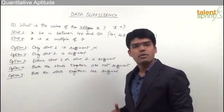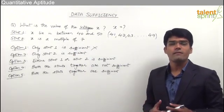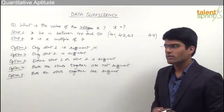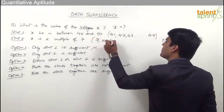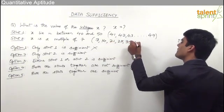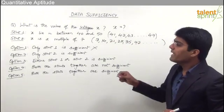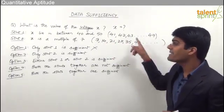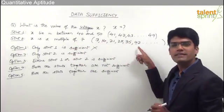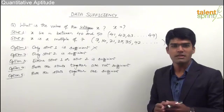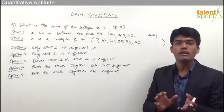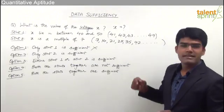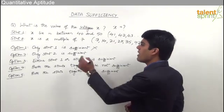Statement two says x is a multiple of 7. That means x can be 7, 14, 21, 28, 35, 42 and so on up to infinity. Even from statement two we can find possible values of x, but what exactly x is out of these infinite values is not known. Since statement two is not giving us a unique answer, statement two alone is insufficient to answer the question, so option two cannot be the answer either.